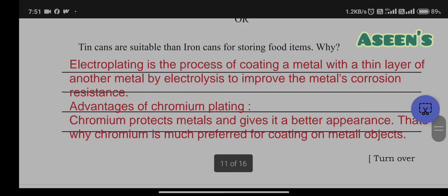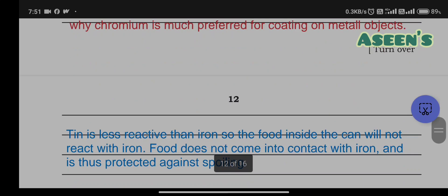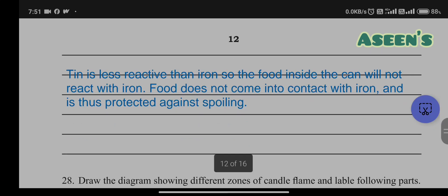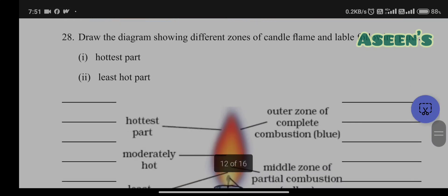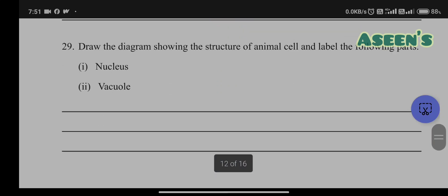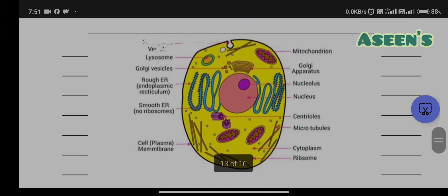Tin cans are suitable than iron cans for storing food items, why? Tin is less reactive than iron and hence food inside the can will not react with iron. This is a candle diagram which is available in your notes. Next, a diagram of animal cell available in your textbook.